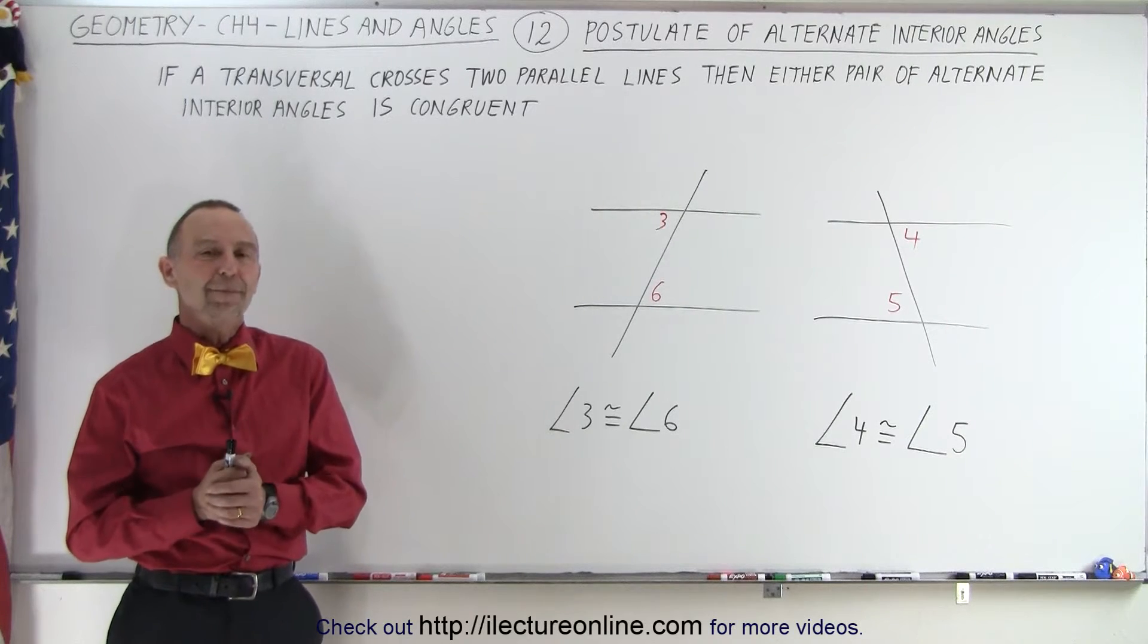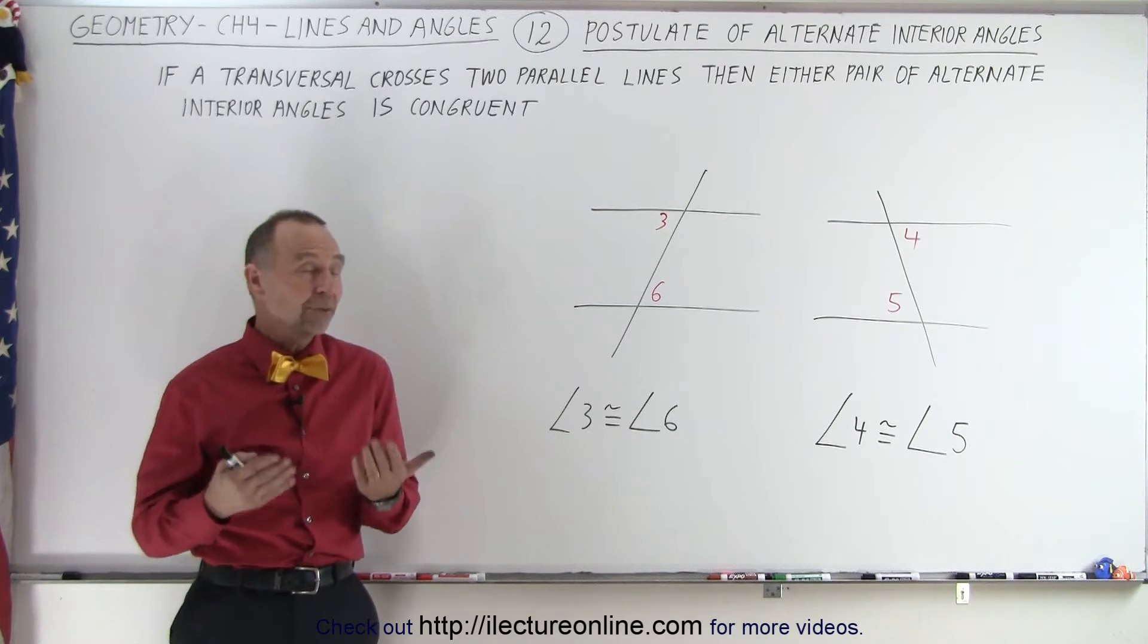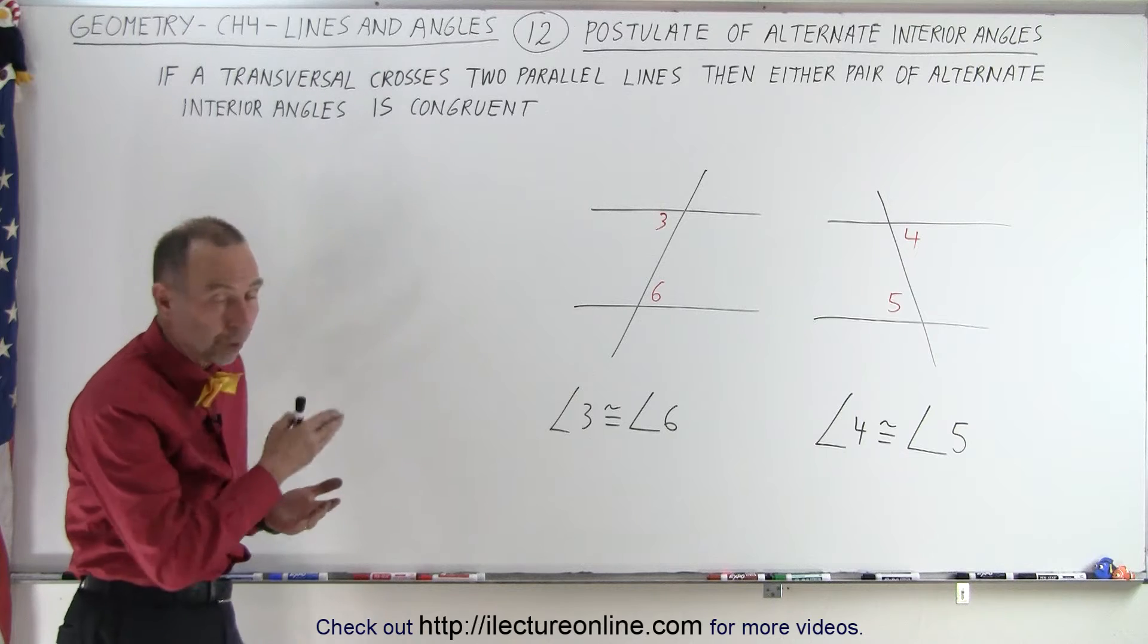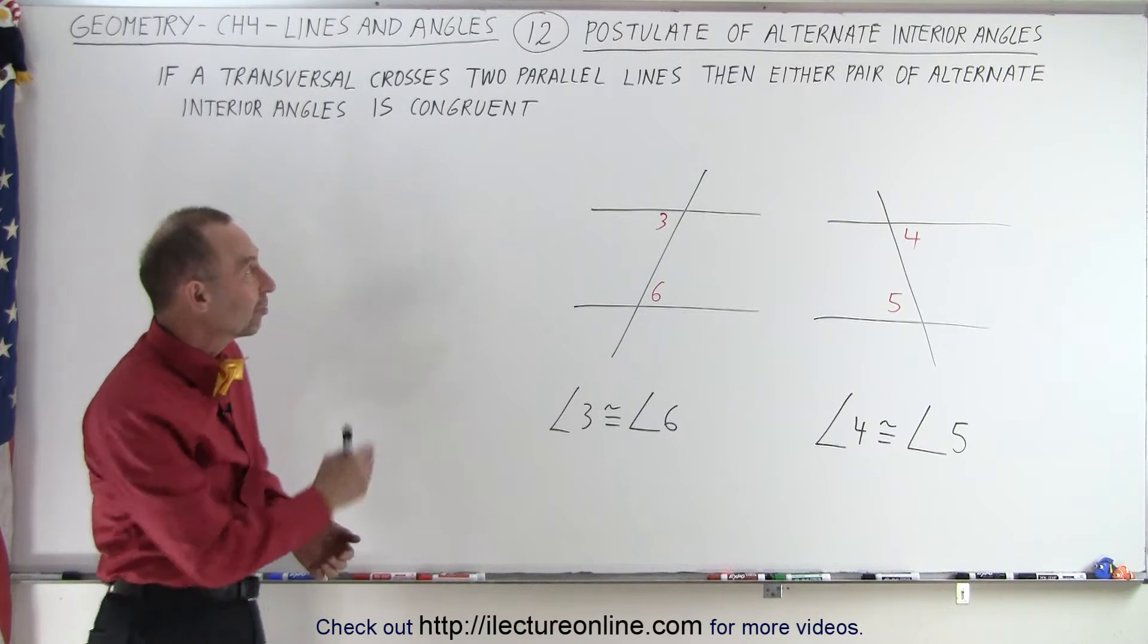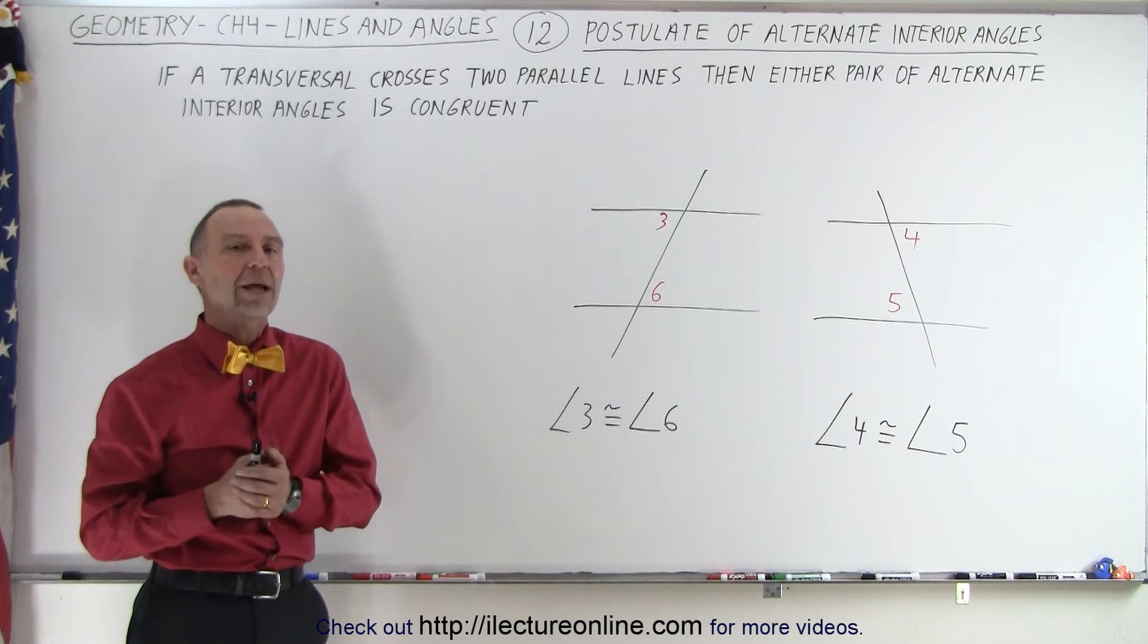Welcome to Electron Line. A second postulate that comes about when we have a transversal crossing two parallel lines is the postulate of alternate interior angles.